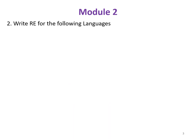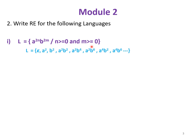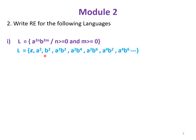Next question is to write a regular expression for the language a^(2n) b^(2m) where n ≥ 0 and m ≥ 0. The possible strings in this language are: if n and m both are 0 then we get epsilon; if m is 0 and n is 1 we get a^2; if n is 0 and m is 1 we get b^2; if both are 1 then a^2 b^2, and so on.